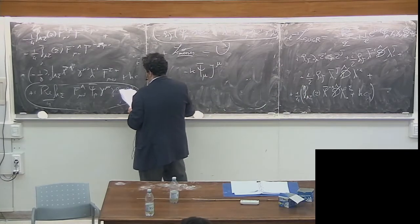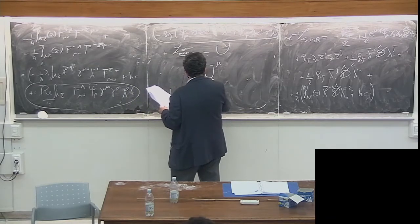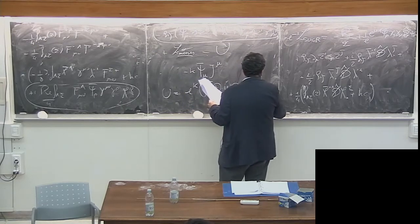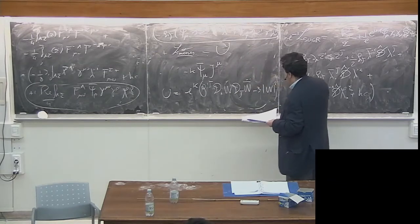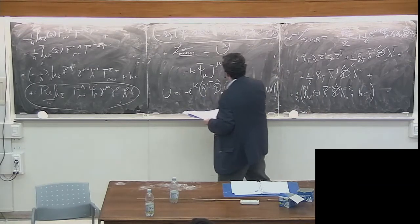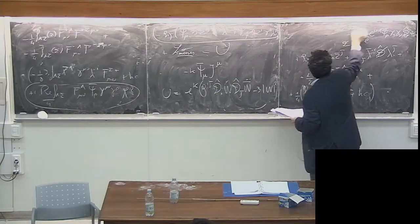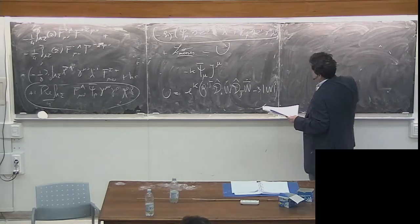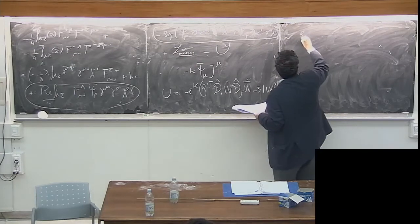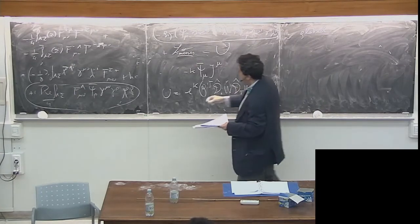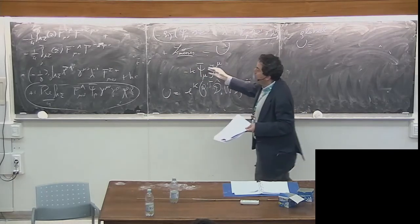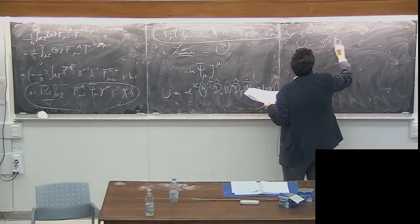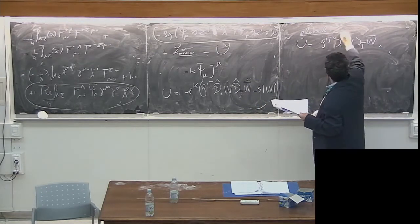The potential U is e^K, where K is the Kähler potential. The scalar potential is g^{i jbar} D_i W D_{jbar} W bar minus 3|W|^2. W is the superpotential. Now we need to define what the D-hat derivative is — that will take the rest of the lecture — because this is an important difference with respect to the global case.